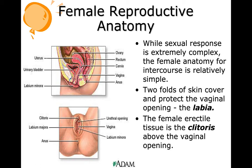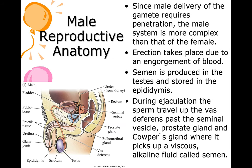While sexual response is extremely complex, the female anatomy for intercourse is relatively simple. Two folds of skin cover and protect the vaginal opening — this is the labia. The female erectile tissue is the clitoris, above the vaginal opening. The clitoris and the penis are similar — they come from the same tissue and are both erectile tissue.